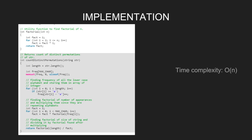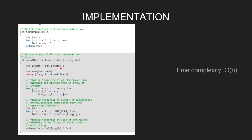Now let's look at the implementation. We define 'length' as the length of the string. Then we create a frequency array and initialize it to 0. We then traverse through the string and find the frequency of all the lower case alphabets, storing them in the frequency array using frequency[string[i] - 'a']++. The frequency array is now filled.